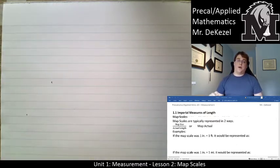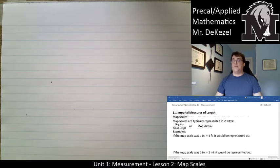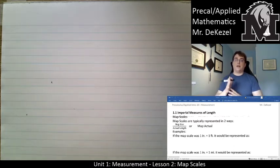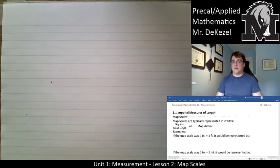On the document on the bottom right, you can see map scales are typically represented in a couple of different ways. On a map you might see the size of the map over the actual length, or you might see a colon or a ratio where the map size is on one side and the actual is on the other.